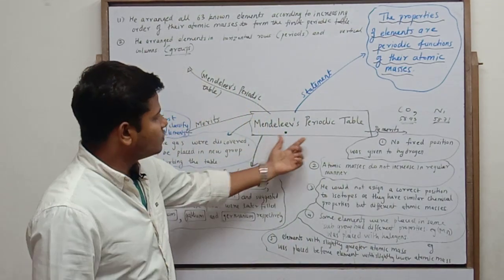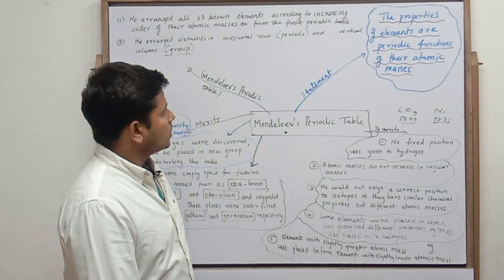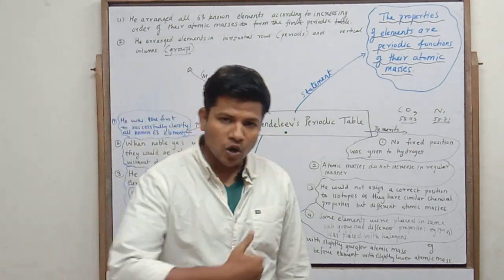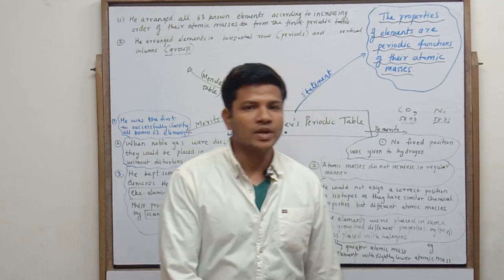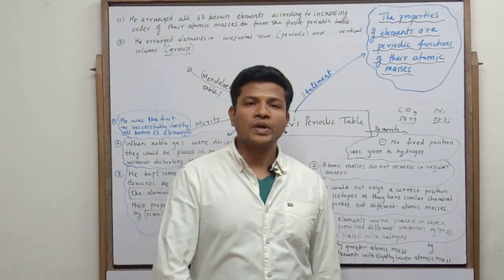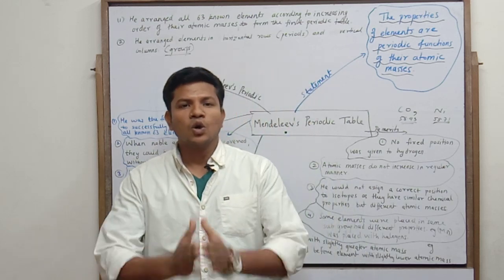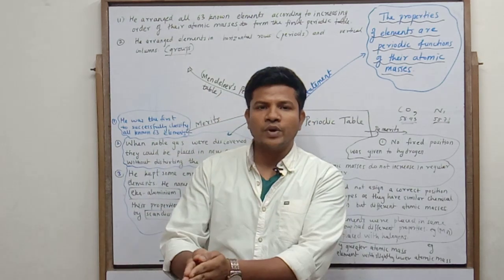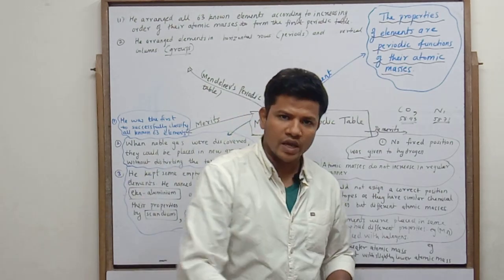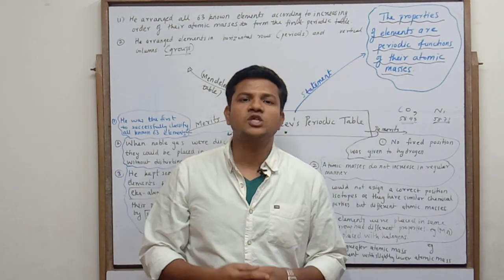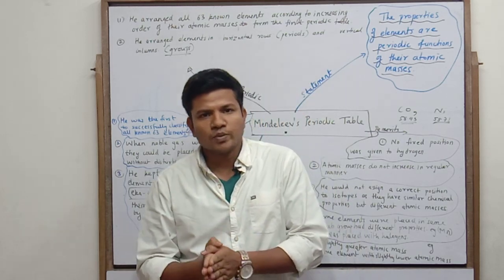Mendeleev's periodic table, 1872. His statement: according to Mendeleev, the physical and chemical properties of elements are a periodic function of their atomic masses. Any chemical or physical property of any element repeats itself periodically, and it is based on the atomic mass of that element — just like the last one we saw with Newland.